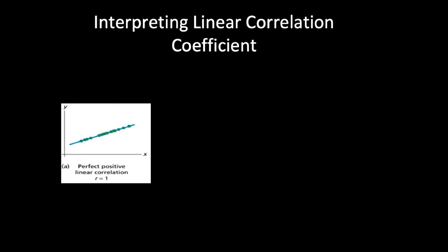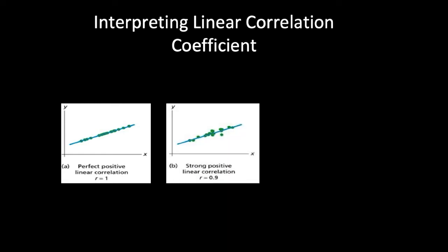Now, interpreting the linear correlation coefficient. If all points lie exactly on a straight line going upward, that is perfect positive linear correlation, and r = 1. If points are close to but not all on the line and going upward, that is strong positive linear correlation, with r around 0.9. If points are more scattered but still trending upward, that is weak positive linear correlation, with r around 0.4.